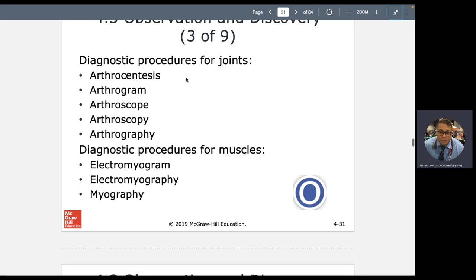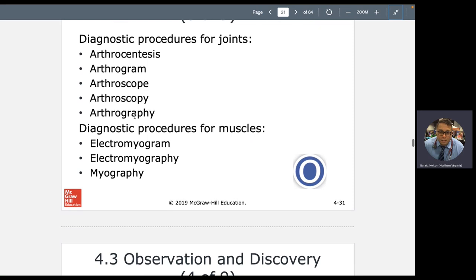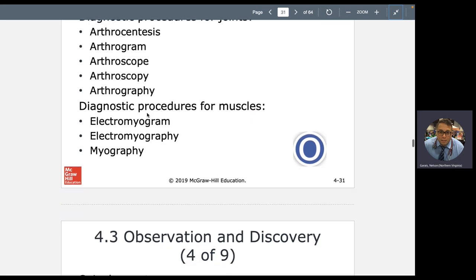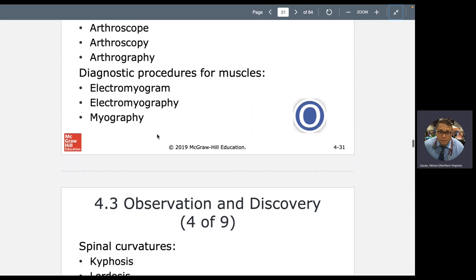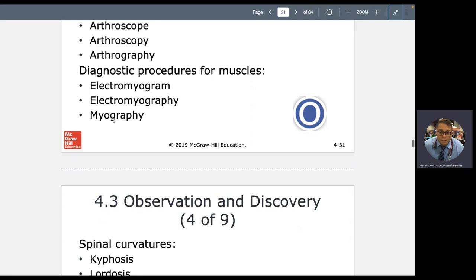Which of the following are diagnostic procedures for joints? A needle sticking into my joint space. That's arthrocentesis. What is the actual report of the recording of my joint space? Arthrogram. What is the actual machine that views the joint space? Arthroscope. What is the actual process of viewing joint space? Arthroscopy. What is the process of recording that joint space? Arthrography. So you could see, again, the questions write themselves. Which of the following is the actual machine that measures the electricity of the muscles? That's the electromyogram. Which is the actual process? That's electromyography. And myography is just the process of recording muscles. And EMG is the acronym for electromyography.